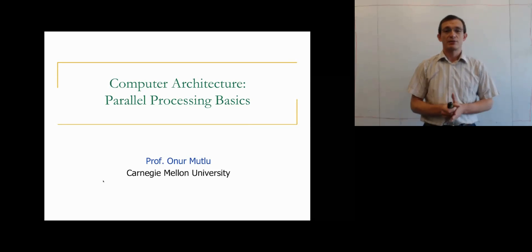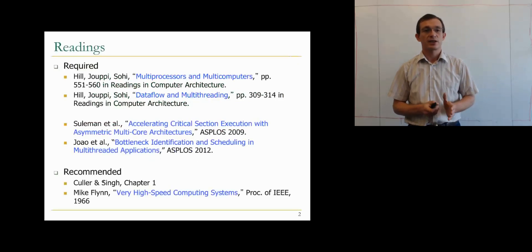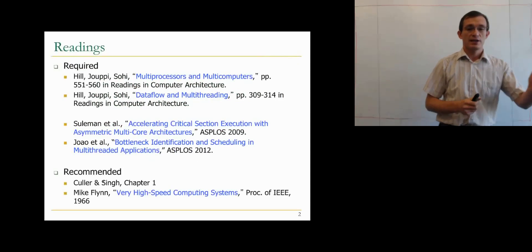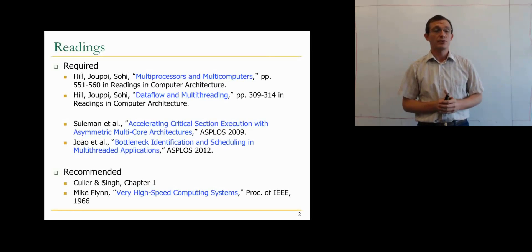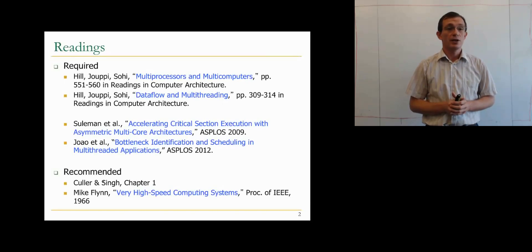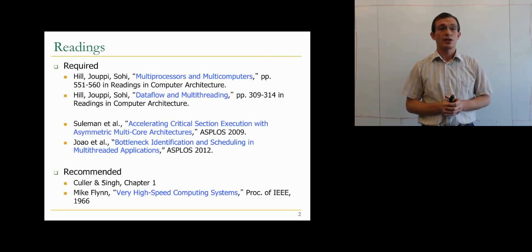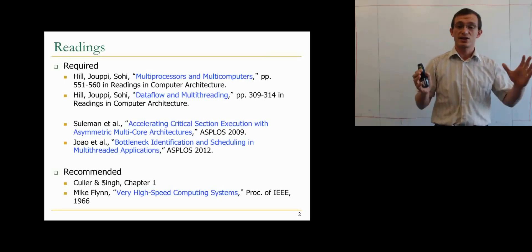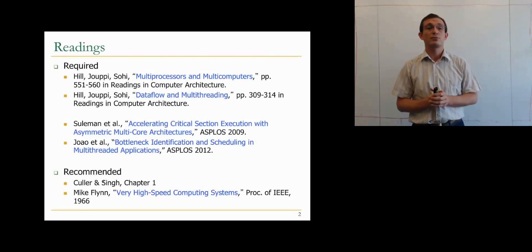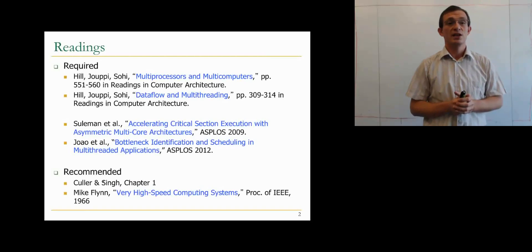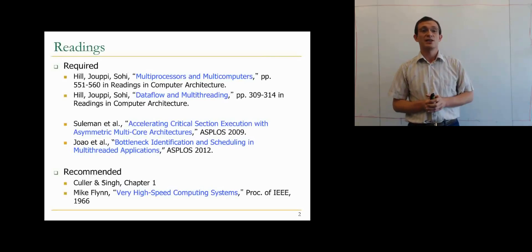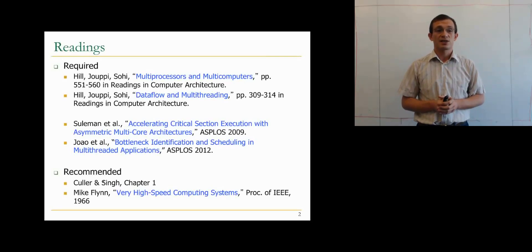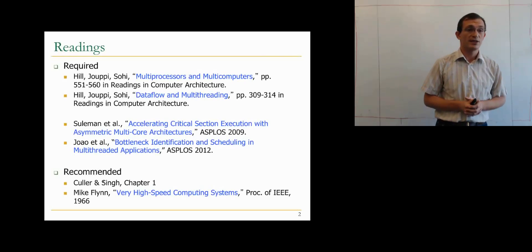Welcome. In this lecture we're going to cover some basics of parallel processing. First, let's take a look at the required readings. These are readings I would strongly recommend you do. The first one is Hill, Juppie, and Sohi, 'Readings in Computer Architecture.' The beginning of the chapter includes multiprocessors and multicomputers and their description — a nice summary of issues in multiprocessors. I would strongly recommend you read this.